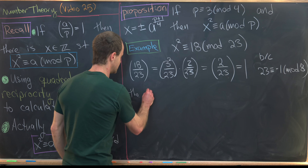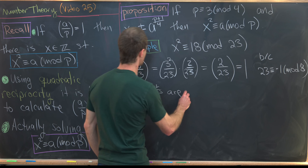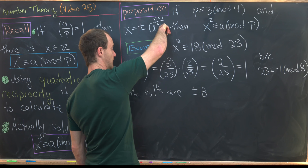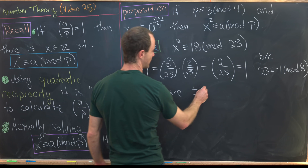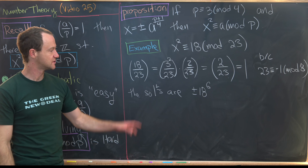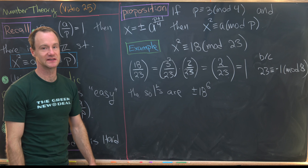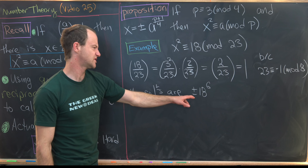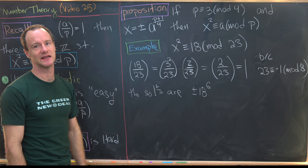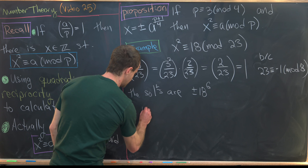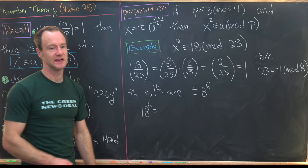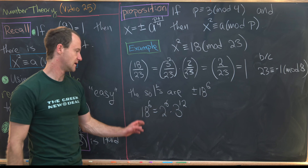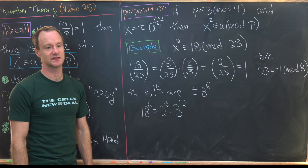The solutions are ±18^((p+1)/4) = ±18^((23+1)/4) = ±18^6. Let's calculate 18^6. We have 18^6 = 2^6 × 3^12 = 8 × 2³ × 27^4. That's because 12 = 3 × 4, which is a nice simplification.